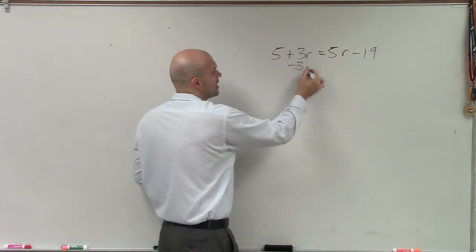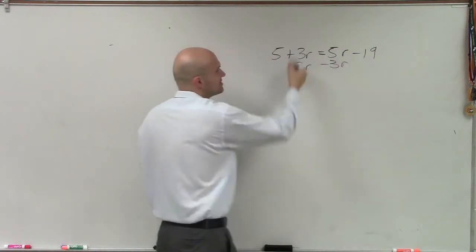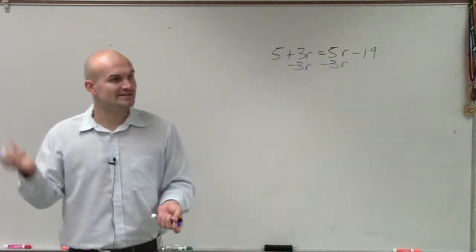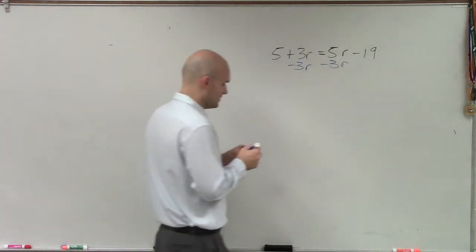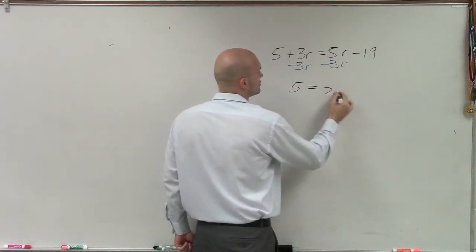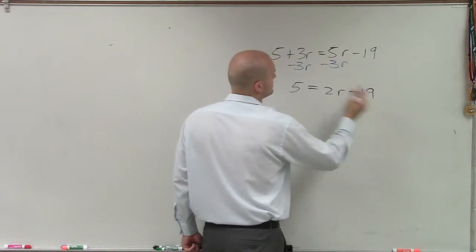So to eliminate it, I'm going to subtract 3r on both sides, because a positive 3r minus 3r is 0r, and 0 times r is 0. Therefore, that's going to leave me now with 5 equals 2r minus 19.